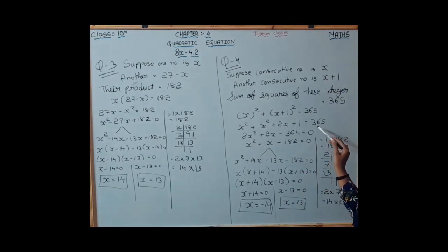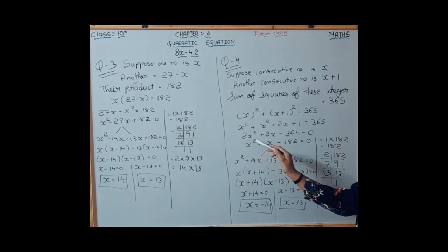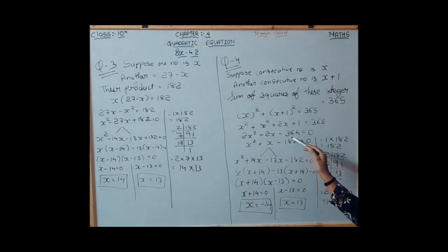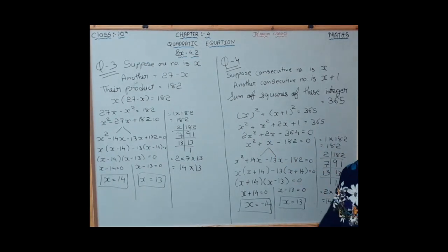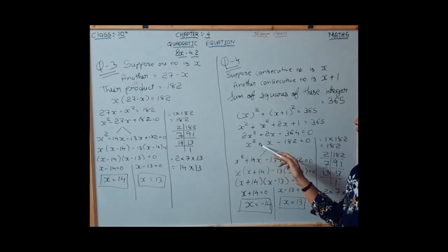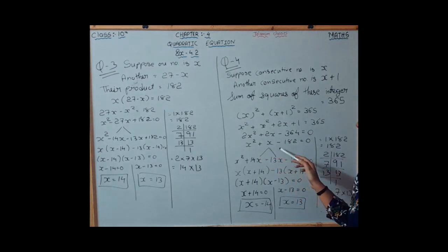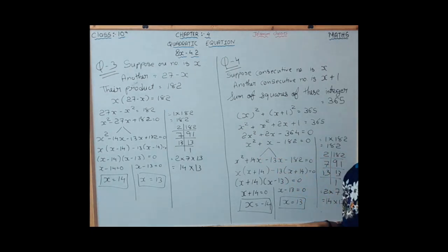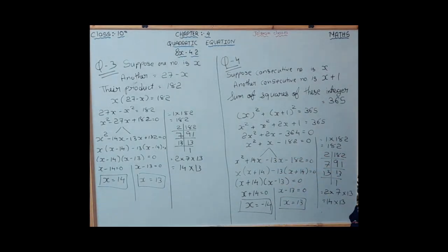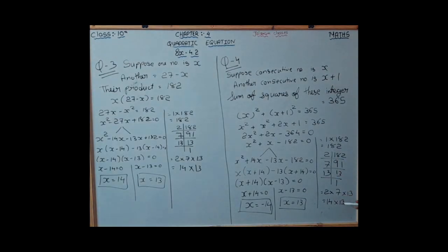This simplifies to 2x squared plus 2x minus 364 equals 0. Taking out 2 as common gives x squared plus x minus 182 equals 0. Using the factorization method, the multiples of 182 are 2, 7, and 13, also equal to 14 and 13.